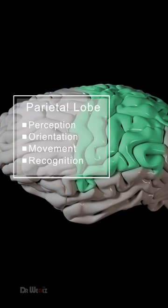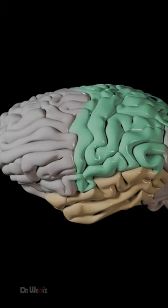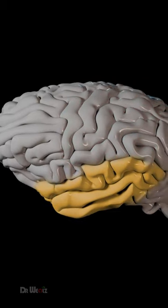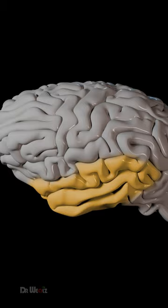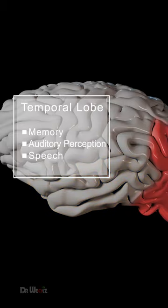The parietal lobe interprets sensory information for cognitive purposes and helps to coordinate spatial interactions, permitting us to be aware of our surroundings. The temporal lobe controls the main auditory cortex,